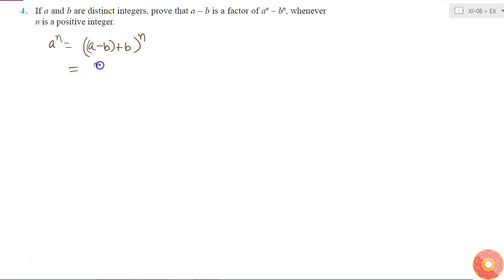This is equal to nC0 (a-b) to the power n times b power 0, plus nC1 (a-b) to the power n-1 times b power 1, plus nC2 (a-b) to the power n-2 times b squared, plus so on up to...